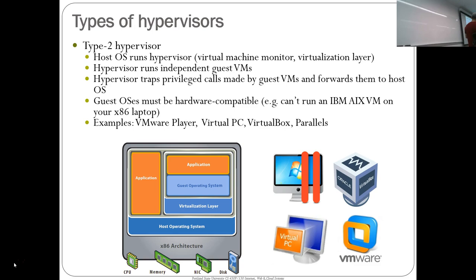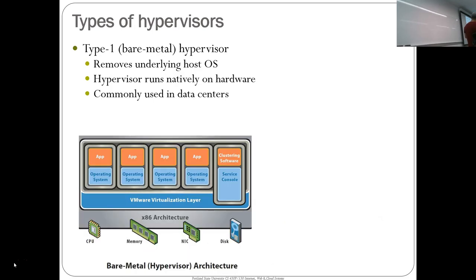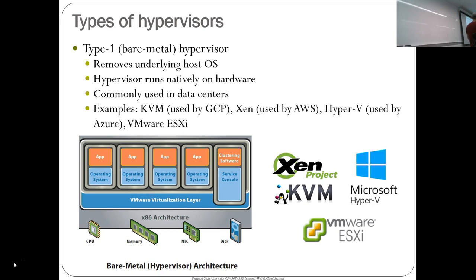Examples of type 2 hypervisors include VirtualBox, which you're using in this class. There's also the type 1, or bare metal hypervisor, which removes the underlying host OS — the hypervisor runs natively in hardware or firmware. This is what you get in the cloud. Examples used in data centers: Xen is used by AWS, KVM by Google, Microsoft Hyper-V by Azure, and VMware ESXi. They all supply the same functionality to run virtual machines on those nodes.